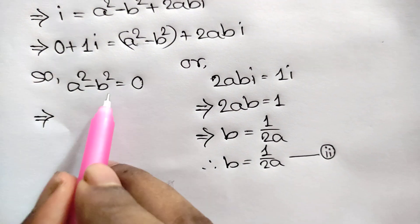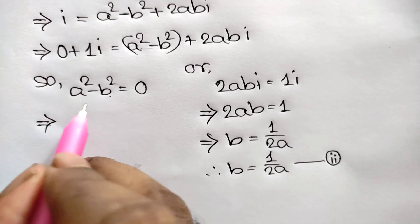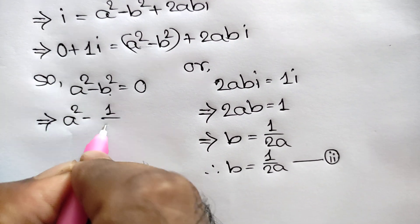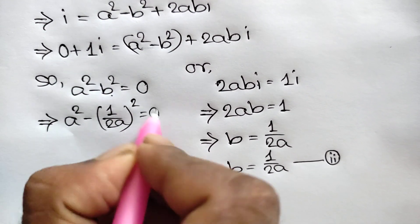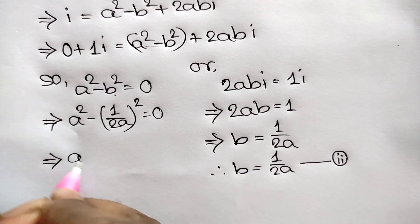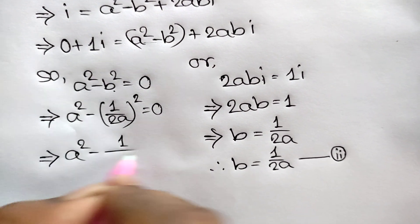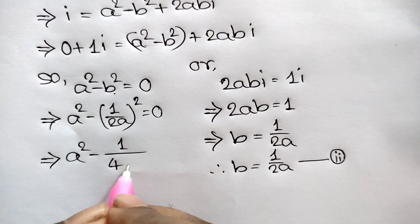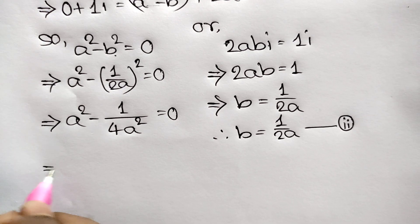Substituting b = 1/(2a) from equation 2 into a² − b² = 0, we get a² − (1/(2a))² = 0.